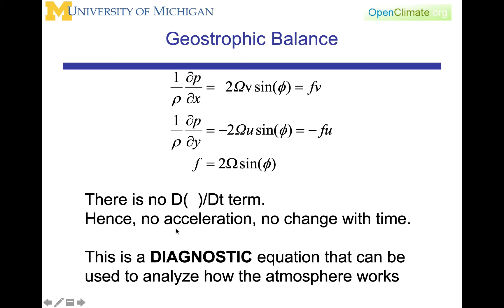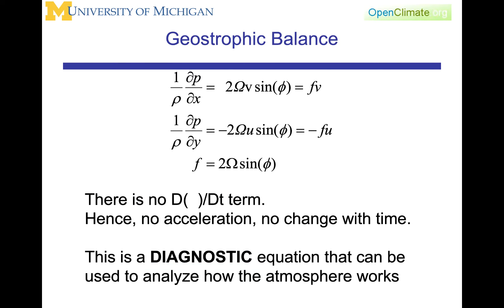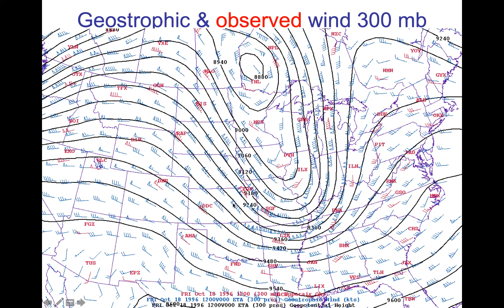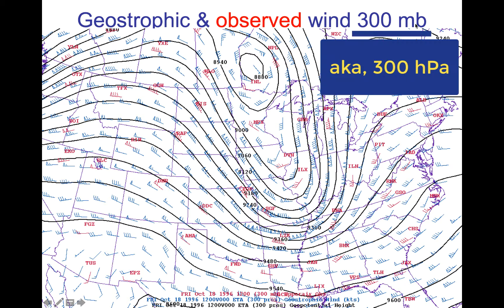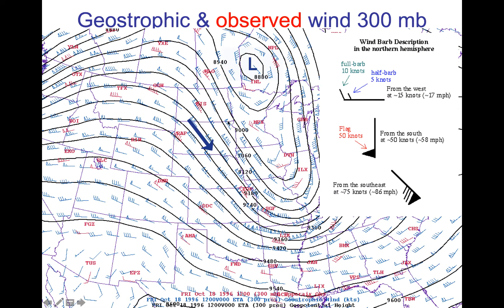The geostrophic balance is generally considered to be a diagnostic equation — a quick evaluation of whether you have a good representation of the pressure field and the influence of Earth's rotation on the flow. If we look at a typical weather map — in this case geopotential at 300 hectopascals — here's a low, and shown in blue are the geostrophic wind barbs.